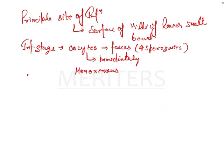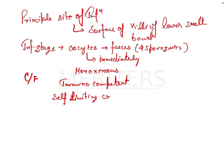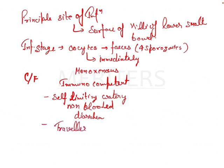Regarding clinical features: in an immunocompetent host, the infection is self-limiting, presenting as self-limiting watery non-bloody diarrhea. In these patients, cryptosporidium can also cause traveler's diarrhea.